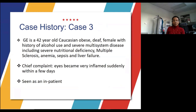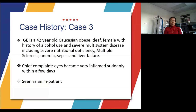Our final case for vitamin A deficiency is a 42-year-old Caucasian female who was obese with a history of alcohol use and severe multi-system disease, including nutritional deficiency, multiple sclerosis, anemia, sepsis, and liver failure. Her chief complaint was that her eyes became very inflamed suddenly within a few days. This patient was seen as an inpatient.